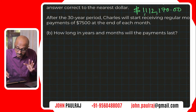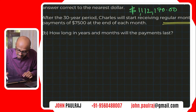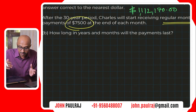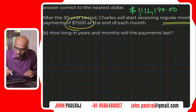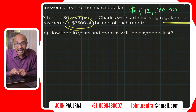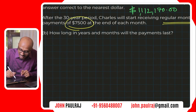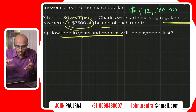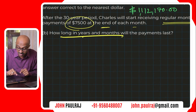The second part of the question says: after the 30-year period, Charles will start receiving regular monthly payments of $7,500. So every month he's going to be receiving $7,500. After retirement, especially in your 60s, receiving that kind of money every month is good — you won't have to depend on anyone else. The question asks: how long in years and months will the payments last? That $1 million is not going to last forever, so we need to find out how long the money will last.